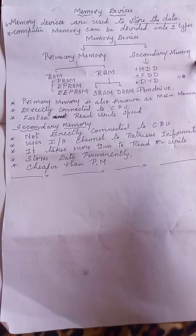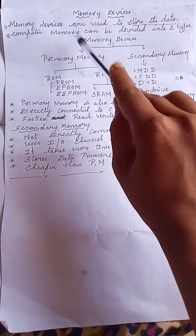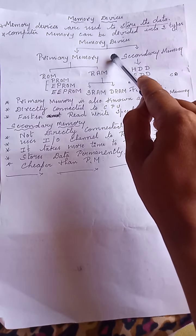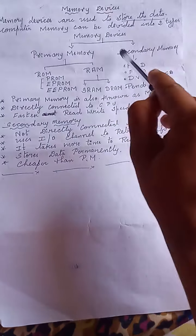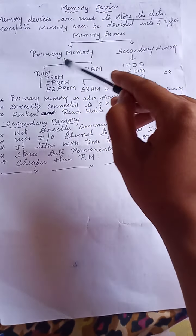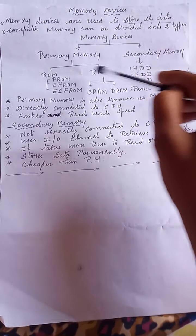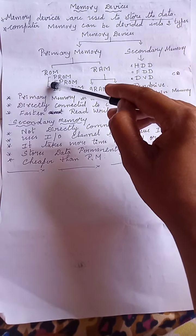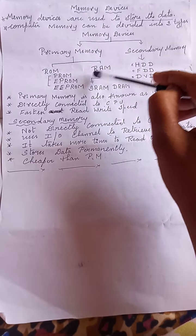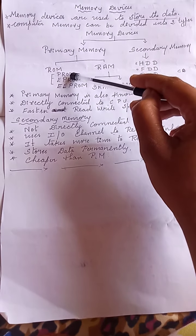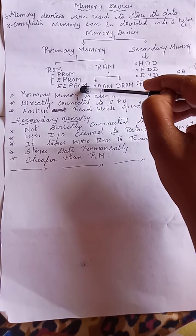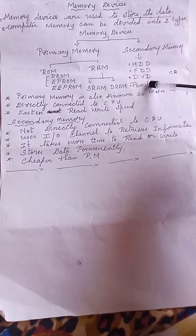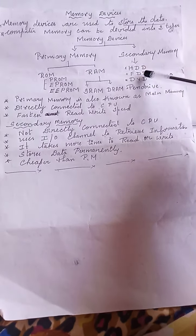Memory can be divided into two types: primary memory and secondary memory. In primary memory, it is further divided into ROM and RAM. ROM stands for Read Only Memory and RAM stands for Random Access Memory. In ROM we have PROM, EPROM, and EEPROM. In RAM we have SRAM and DRAM. Secondary memory includes hard disk, floppy disk, DVD, pen drive, and CD.